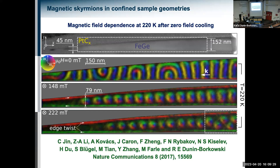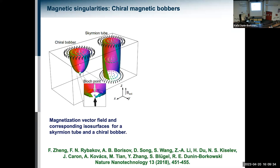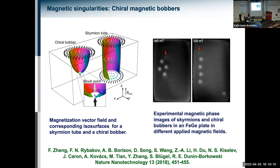Magnetic skyrmions are traditionally straight strings of vortex-like texture passing all the way through a thin sample — 100 nanometers in the previous example. But in some cases they can terminate in the middle of the sample at magnetic singularities or magnetic Bloch points. By following a careful sequence of how the sample is cooled and how the external field is applied, it's possible to nucleate textures with singularities, now termed magnetic bobbers. These are phase images recorded holographically — they appear the same size as skyrmions but with weaker contrast, corresponding exactly to what you'd expect if the singularity occurred near the middle of the sample.